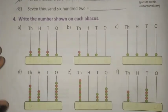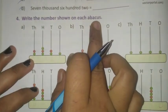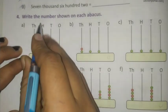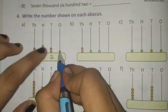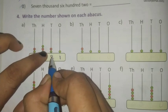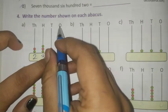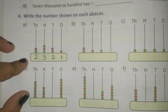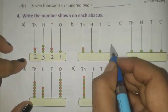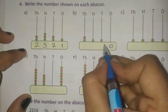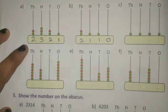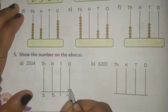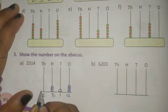Write the number shown on each Abacus. Simply count the balls and write the number. One ball at ones, two balls at tens, three balls at hundreds, two balls at thousands — so the number is 2321. If no ball is there, write zero. Do parts c, d, e, f similarly. Here you have to draw the balls: two, three, one, four.